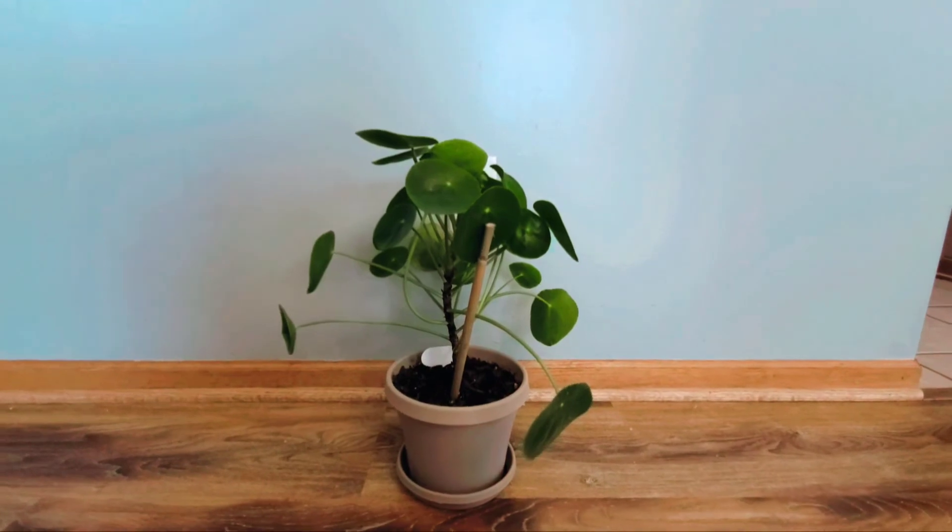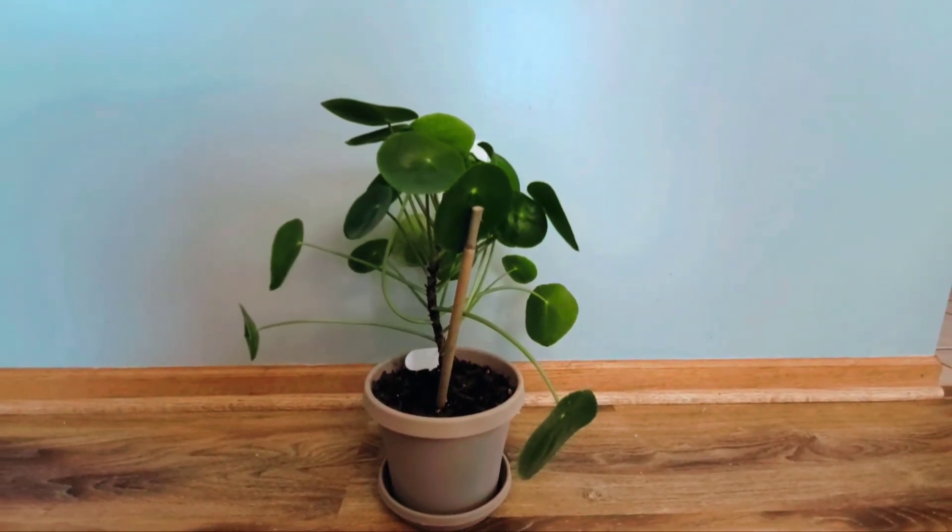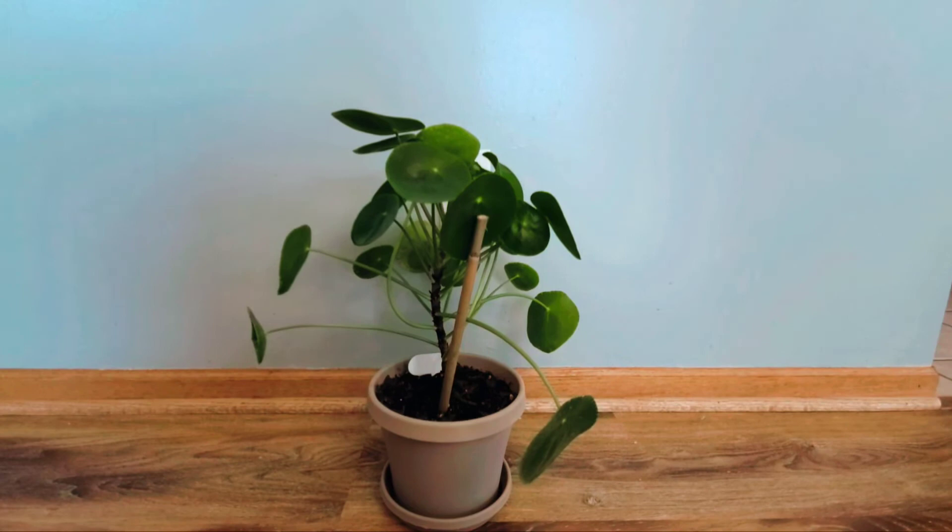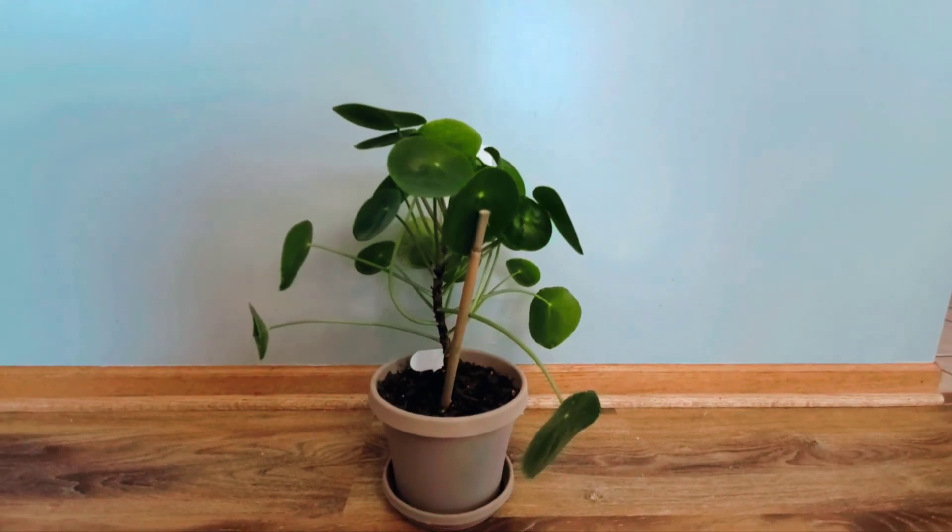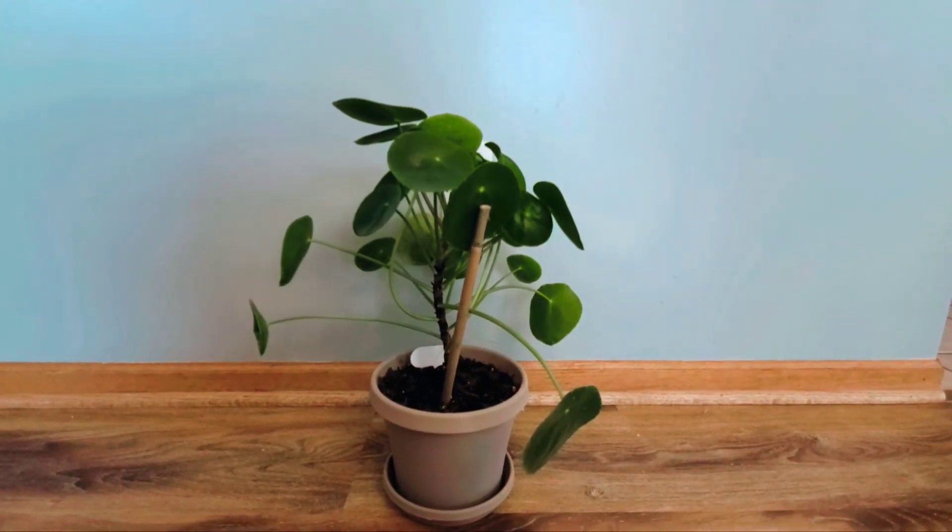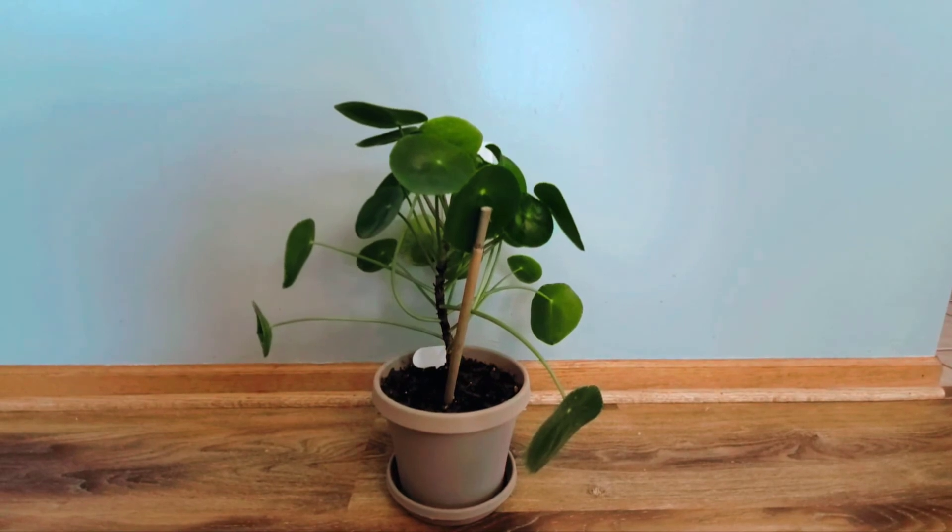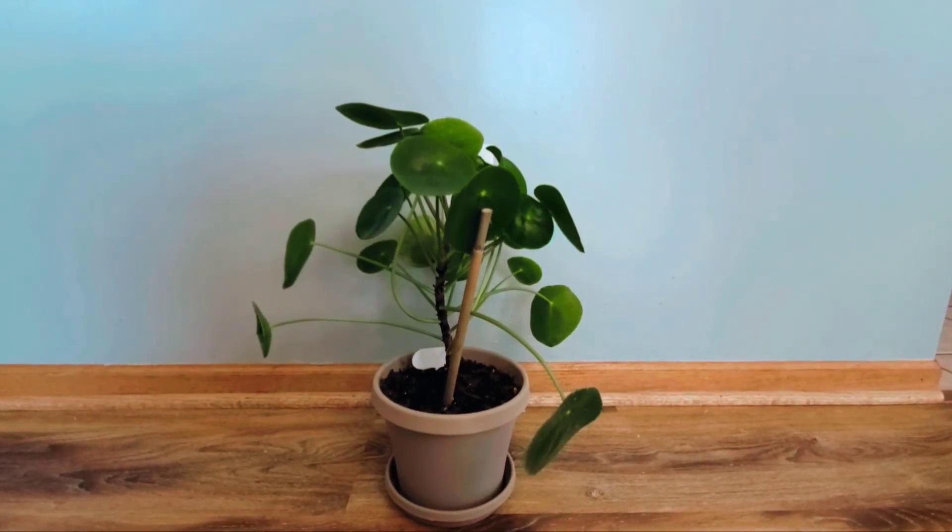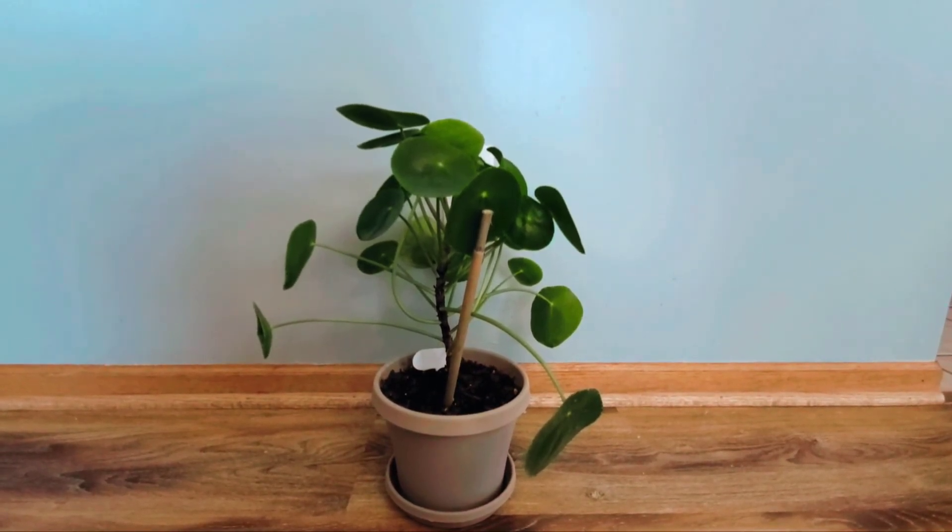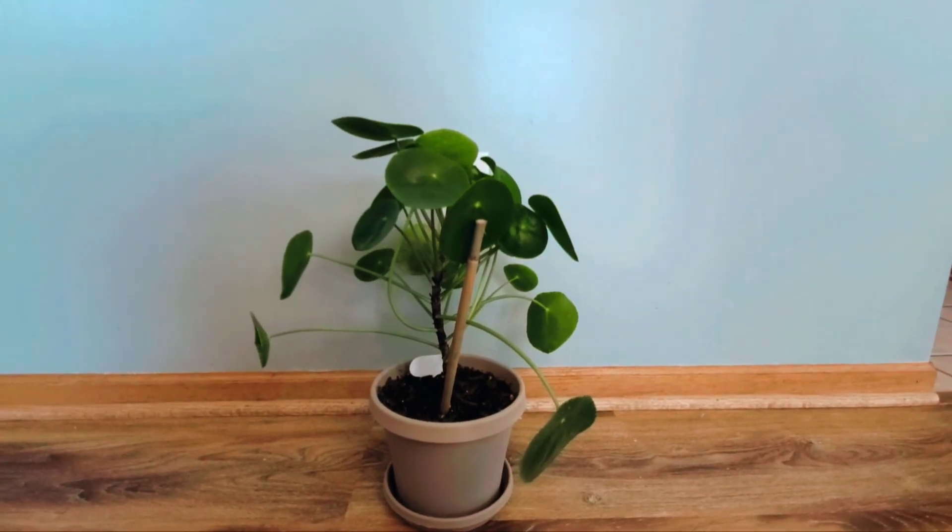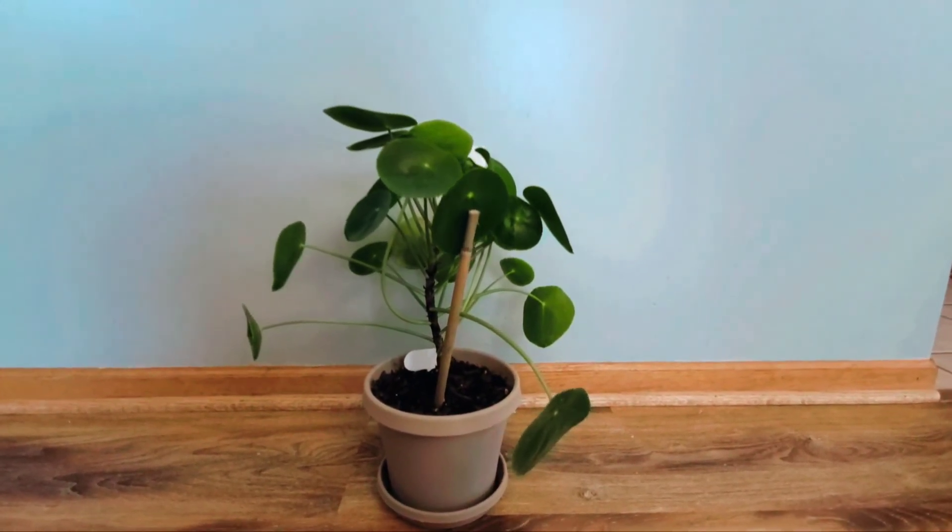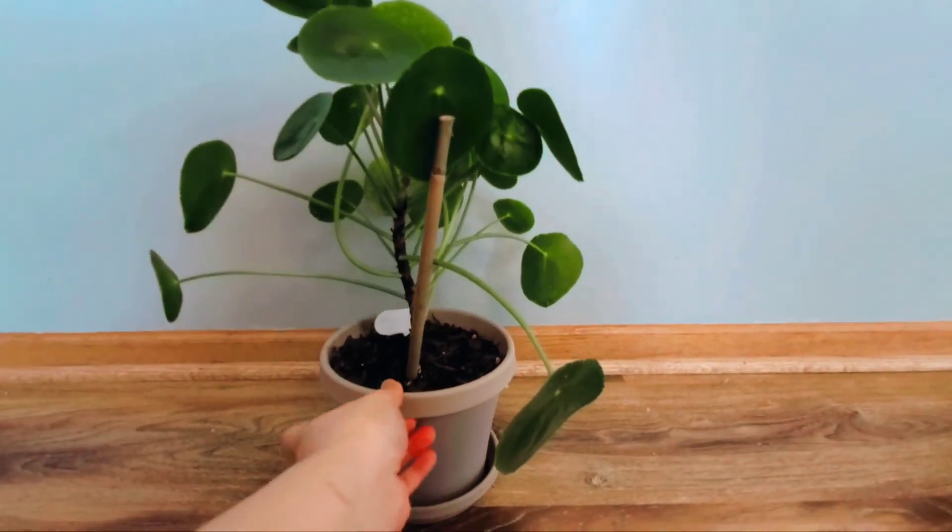For me, that's an indication that if I'm watering a plant more frequently than every seven days at least, then I think they're trying to let me know that they might need a bigger pot. And who wants to water the plants twice a week? I don't.